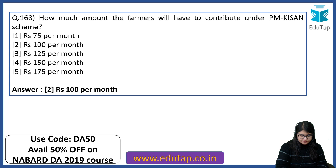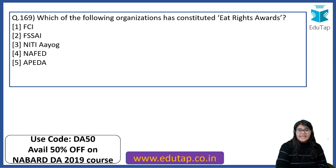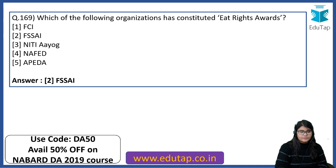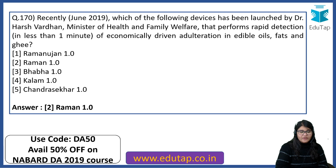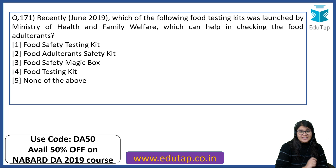Which organization constituted the EAT Rights Awards? The right answer is FSSAI. Which device was launched by Dr. Harsh Vardhan, Ministry of Health and Family Welfare, that performs rapid detection of economically driven adulteration in edible oils, fats and ghee? It is Raman 1.0. Which food testing kit was launched by the Ministry of Health and Family Welfare to help check food adulteration? The answer is Food Safety Magic Box.